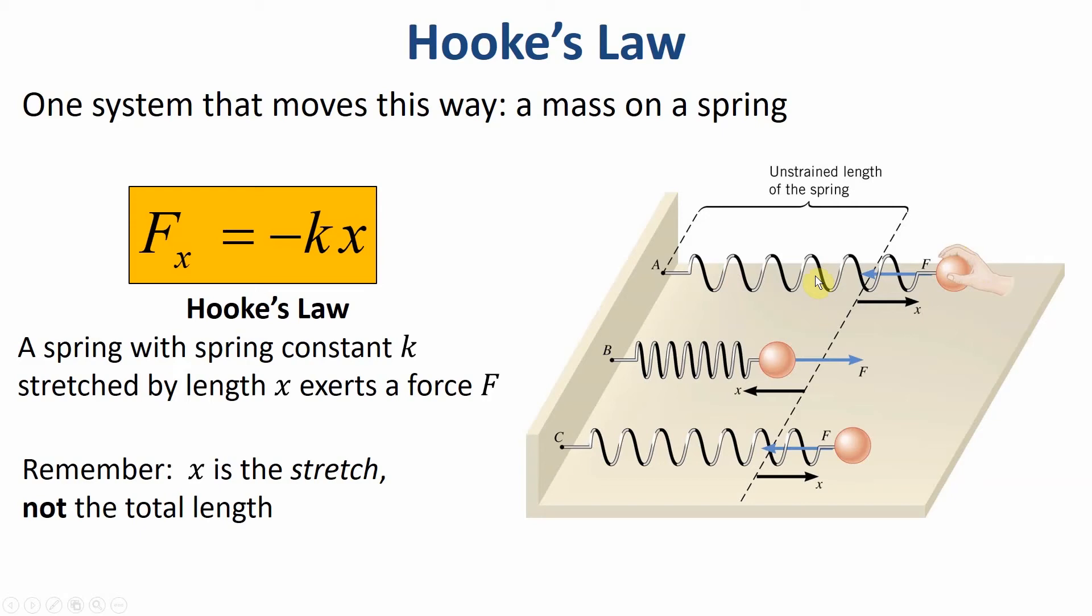Now the first thing is the force. A nice equation called Hooke's Law tells us the force that a spring applies on an object. The amount of force, this f here, is equal to some constant k called the spring constant. That's a measure of how stiff or floppy a spring is. A large k means a stronger spring and a small k means a weaker spring, times x. Now remember, it's a very important definition. X is the amount of stretch, not the total length of the spring.